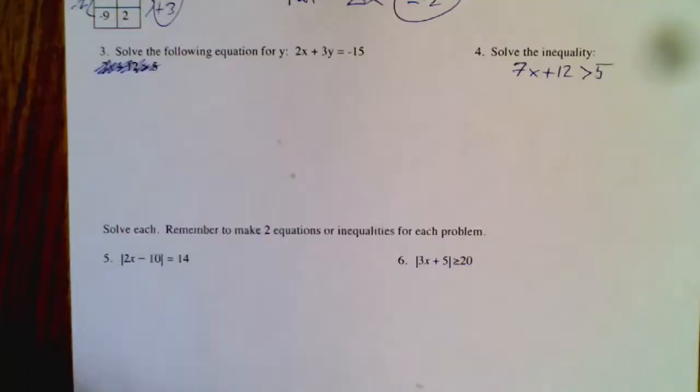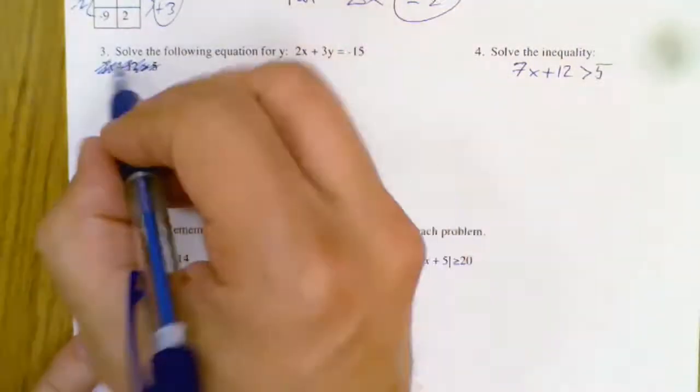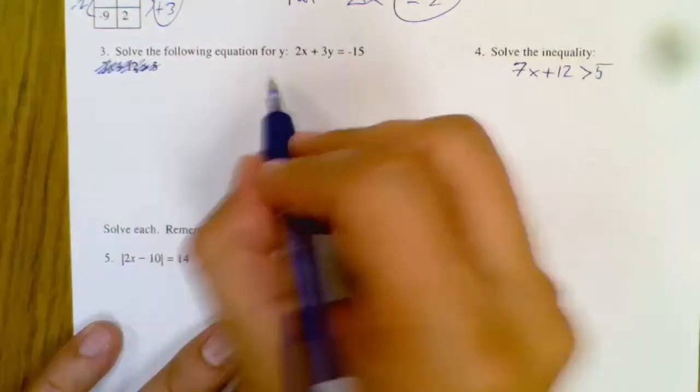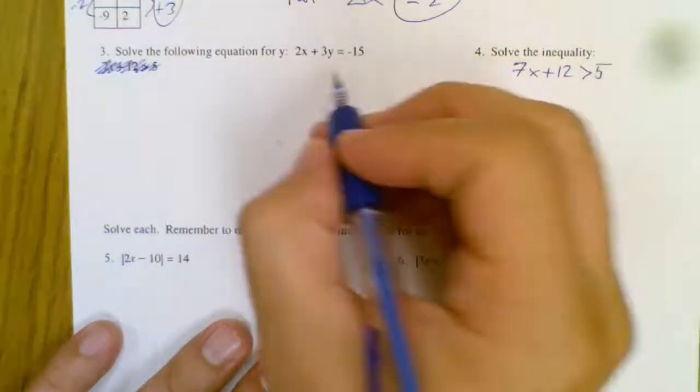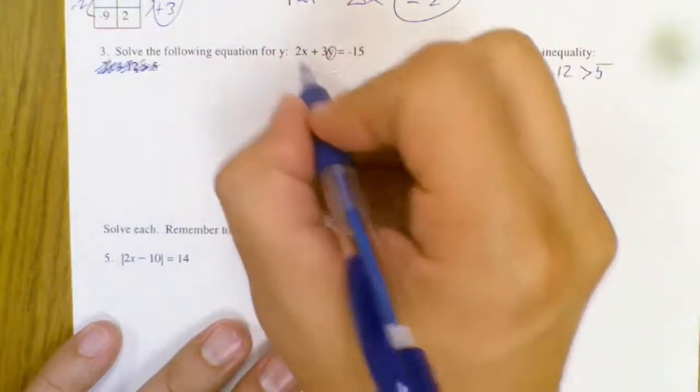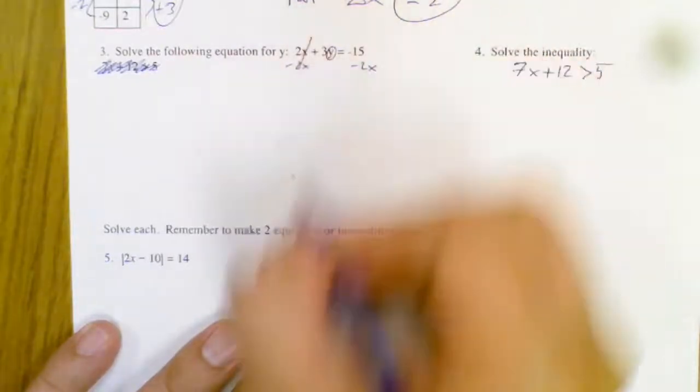Alright, so onto this problem which says solve for y. Ignore this thing, this was actually supposed to be over here. I had a printing issue. Anyway, solve for y means get y by itself. So if I'm attacking this problem, I want to get the x's out of there first.